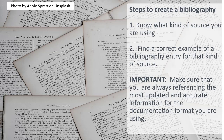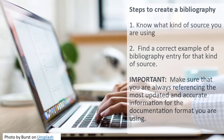Step 2: Find a correct example of a bibliography entry for that kind of source. Because different kinds of sources contain different types of publication information — books, articles, webpages, for example — they are all listed a bit differently. MLA, APA, and Chicago style all publish their own manuals with updated information, available in the Tutoring and Writing Center at the Jacobs Library. Many other reputable sources are available for correct examples, such as the IVCC Style Sheet and the Purdue Online Writing Lab (OWL), both listed on the home page of this tutorial. Important: make sure you are always referencing the most updated and accurate information for the documentation format you are using. Especially if you look online, the information may be incorrect or outdated.